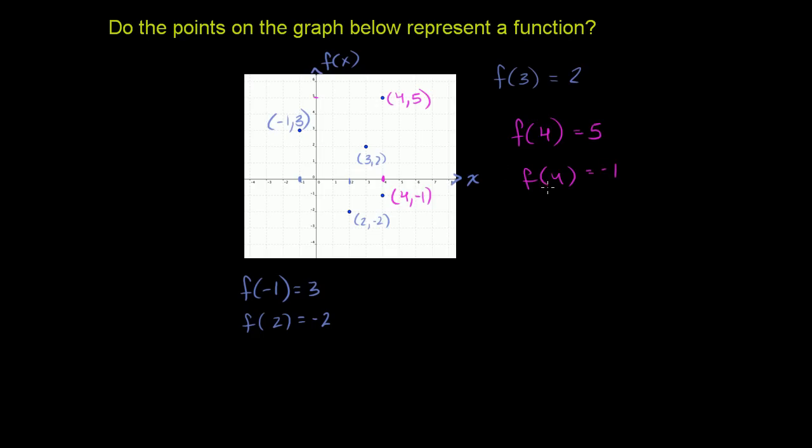So this is not a function. It cannot be a function if, for some input into the function, you could give me two different values. And you can see that right here. An easy test is to just see that for one x-value, I have two points for this relation. So this cannot be a function.